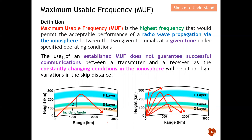The use of an established maximum usable frequency does not guarantee successful communication between a transmitter and a receiver, as the constantly changing conditions in the ionosphere will result in slight variation in the skip distance. When we actually use this maximum usable frequency, we cannot always guarantee successful conditions because the skip distance or skip zone varies. We need to be very careful when using the maximum usable frequency.